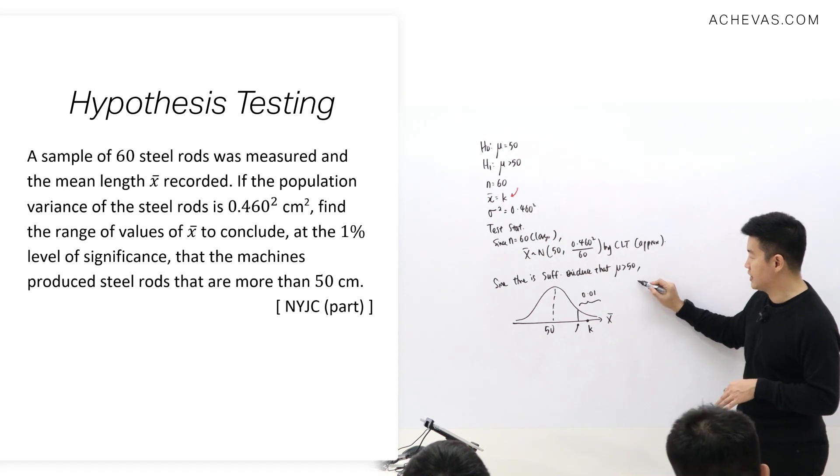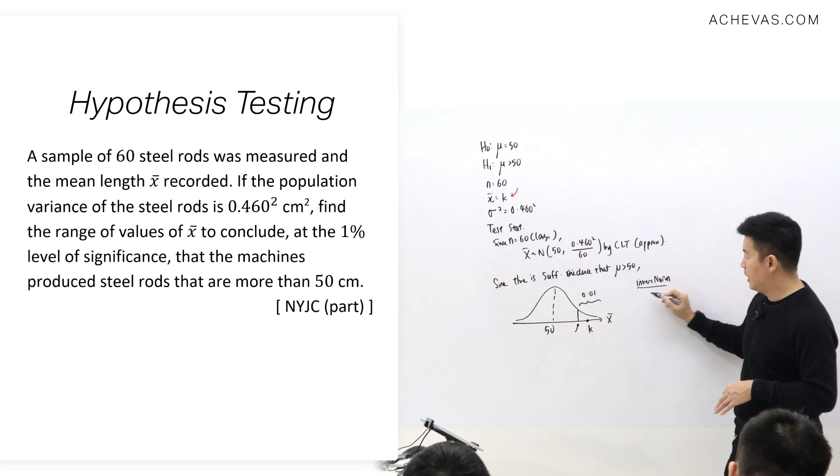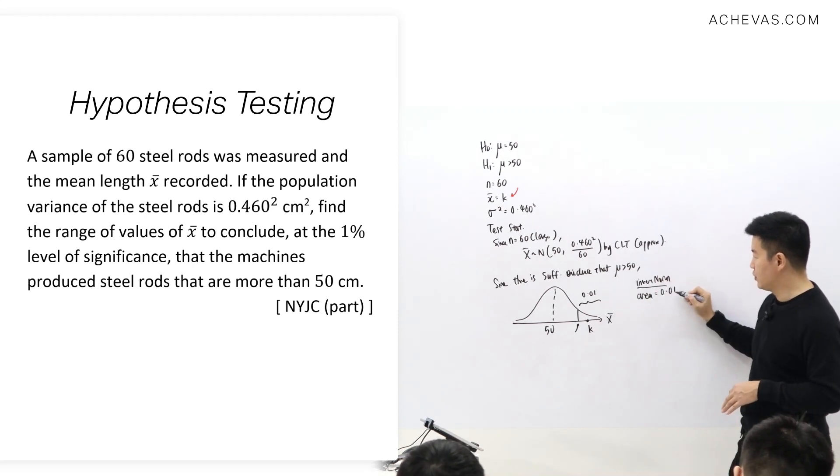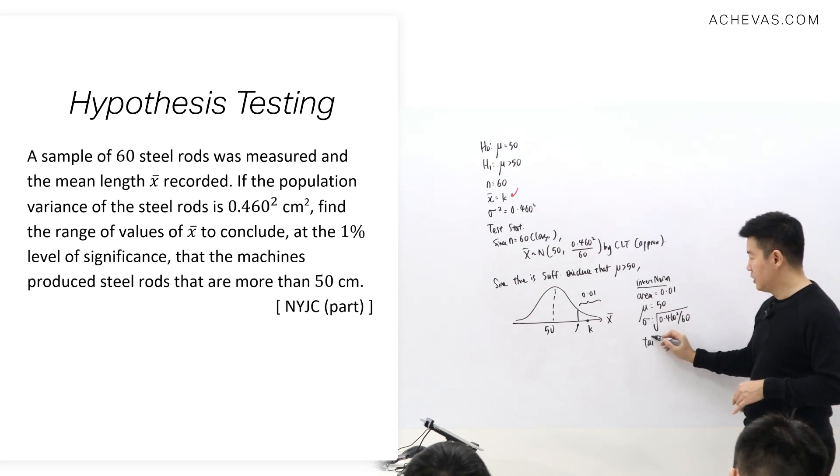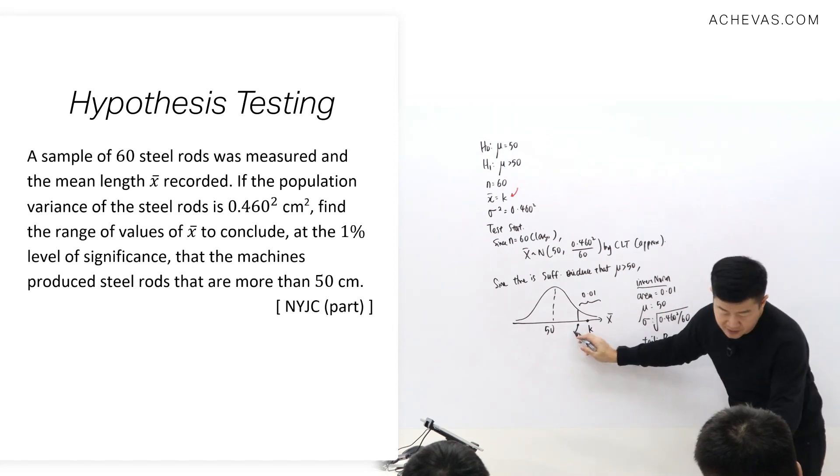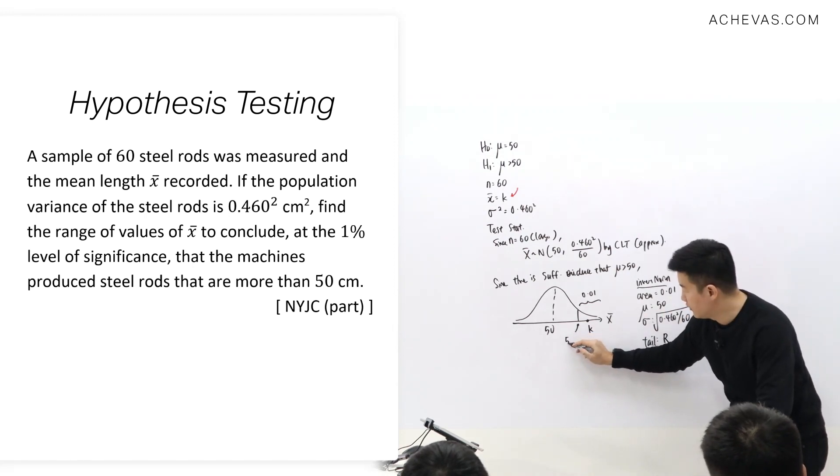Which is not difficult because I can just simply press inverse norm. And the area that I'm going to press will be 0.01. Mu is going to be equal to 50. Sigma is going to be square root of 0.460 squared over 60. Tail is going to be the right tail. I press this, it will give me this number: 50.138.